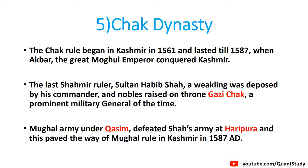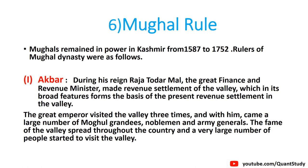Next is the Mughal rule. The Mughal Empire's rule in Kashmir started in 1587 and ended in 1752. This was generally a good period for Kashmir. The first phase of Mughal rule was when Kashmir's potential and revenue generation began as a foundation.